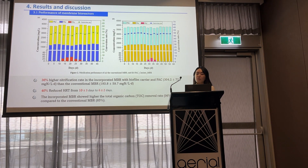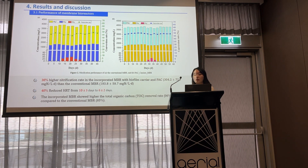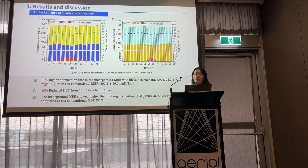As a result, the incorporated MBR showed a significantly higher nitrification rate by 36% compared to the conventional MBR. As a result of this higher nitrification rate, HRT was reduced by 40% from 10 days to 6 days. In addition, the removal rate of total organic carbon TOC removal increased by 11%, from 85% to 96%.